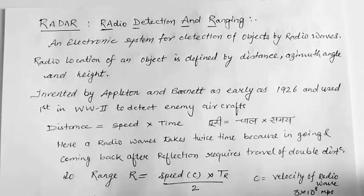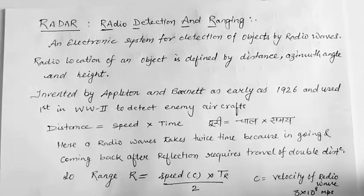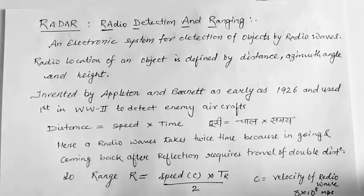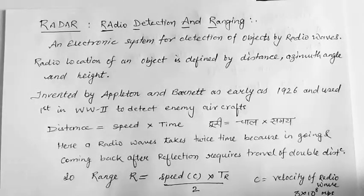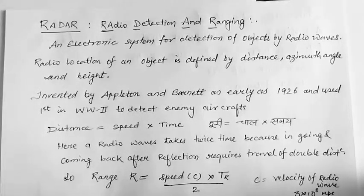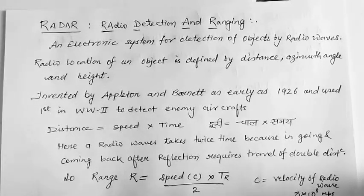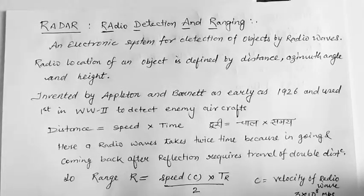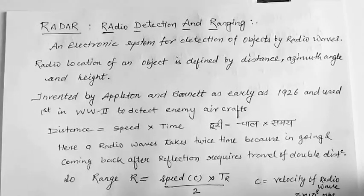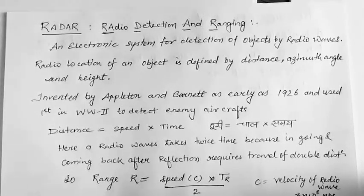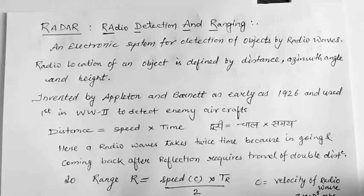Today we will see about radar. Radar is an electronic system for radio location or the detection of objects by radio waves. Radio location of an object is defined by three parameters which are distance, azimuth angle, and height of the objects.